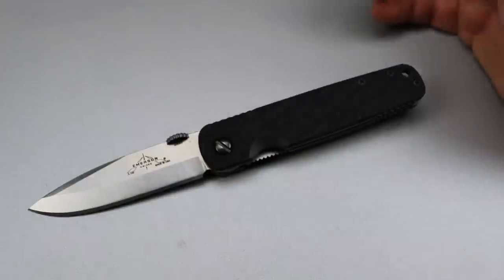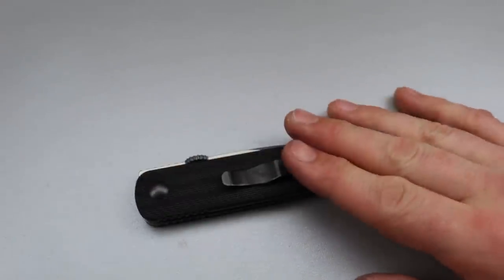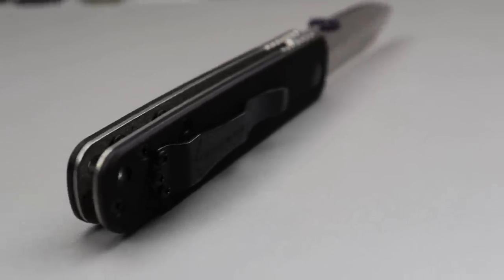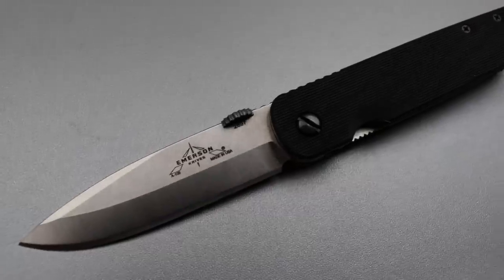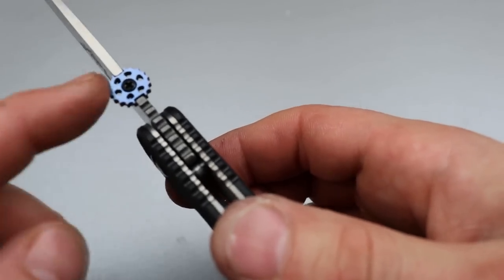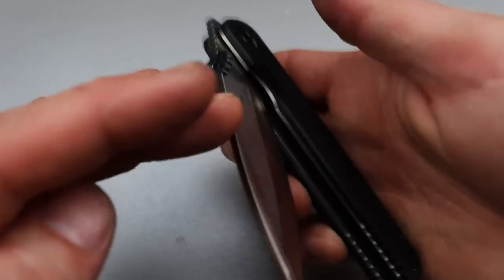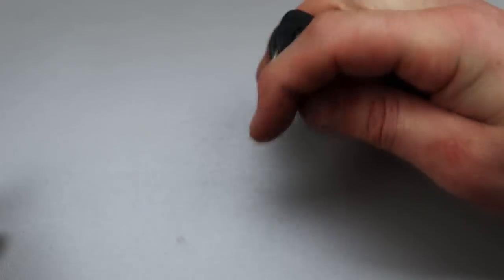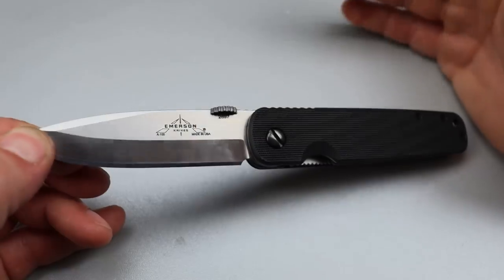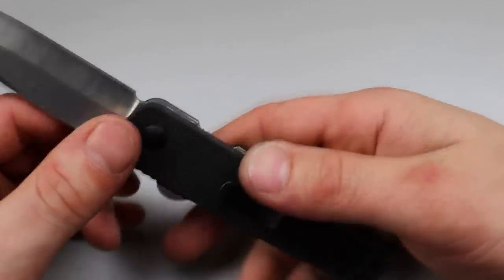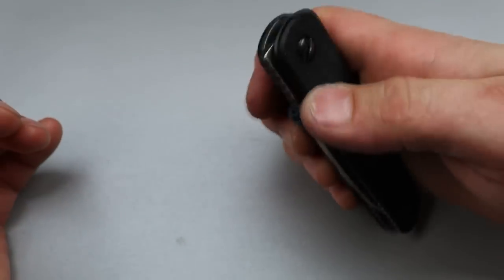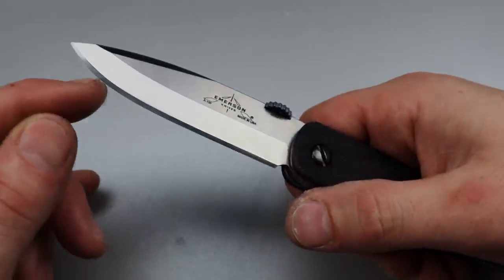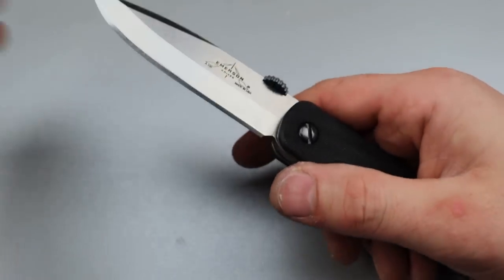Next is the Emerson A100. You can get one of these right now on Emerson's site. I believe they're available. The A100, a hard use liner lock knife. And it does feel tough. It is a very tough knife. I did get their titanium disc that they sell on their site. I do also like that you can front flip it pretty easily too. 154CM blade steel. USA made, G10, titanium liner.